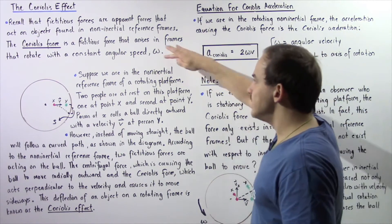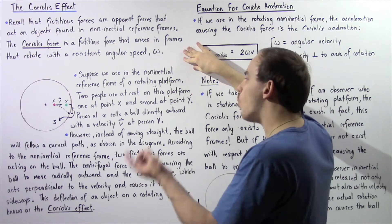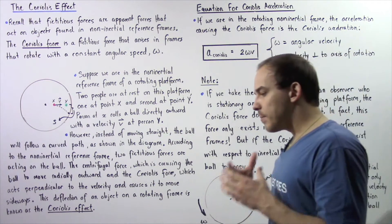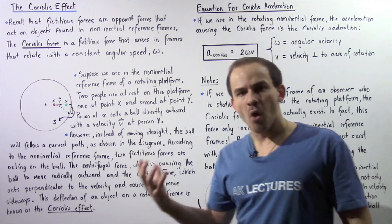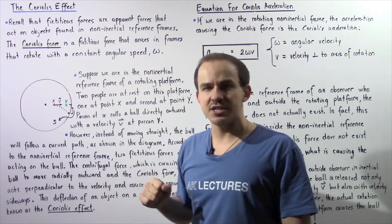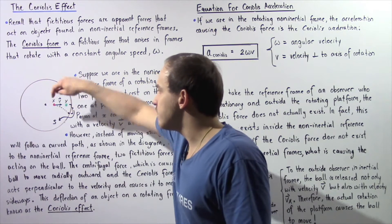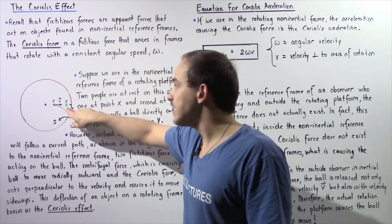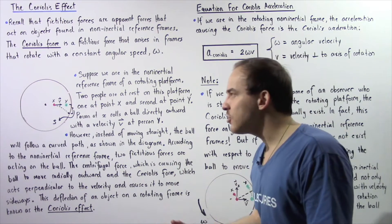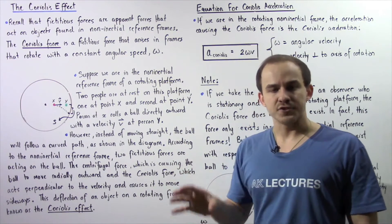Suppose we are in the non-inertial reference frame of the rotating platform. We have two people that are at rest — one is at position X, the second one is at position Y. The person at position X basically takes a ball and rolls that ball with velocity v directly at the person found at position Y. The question is, what exactly will be the pathway as observed by these two people inside this non-inertial reference frame?